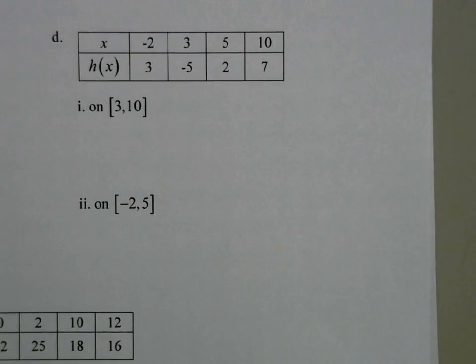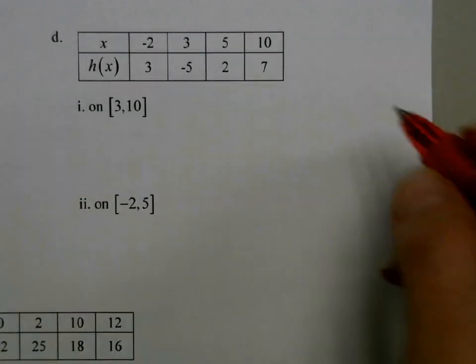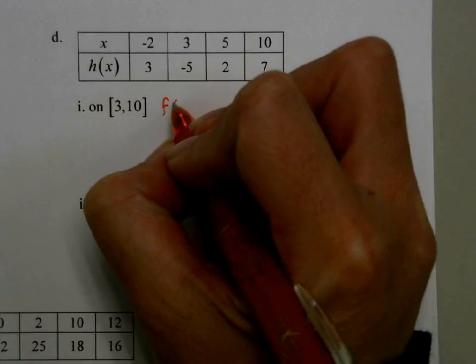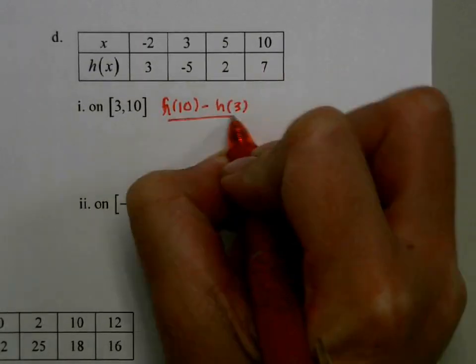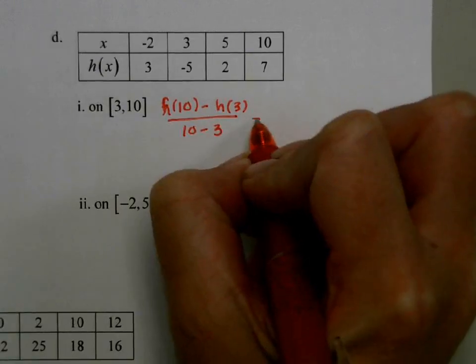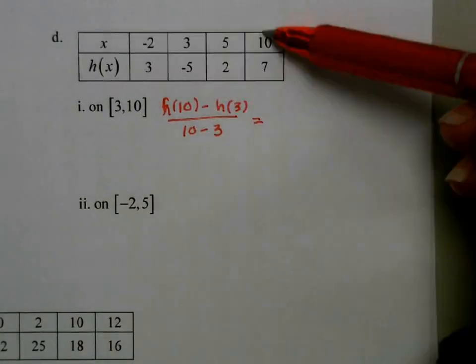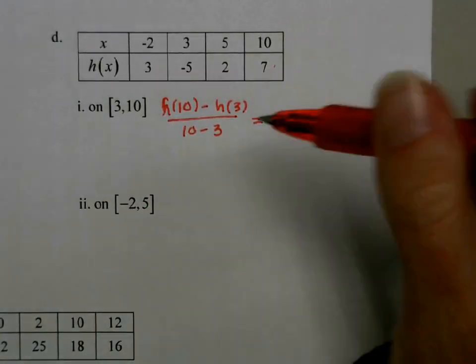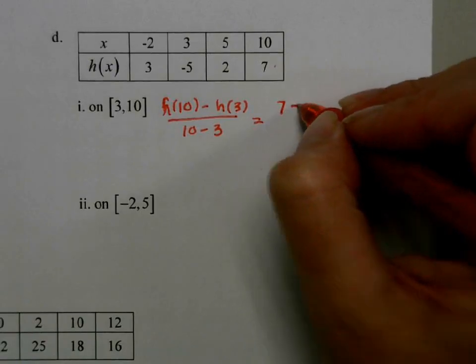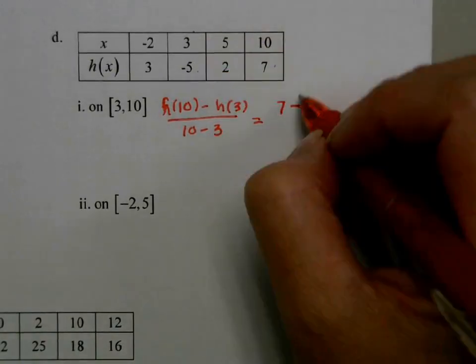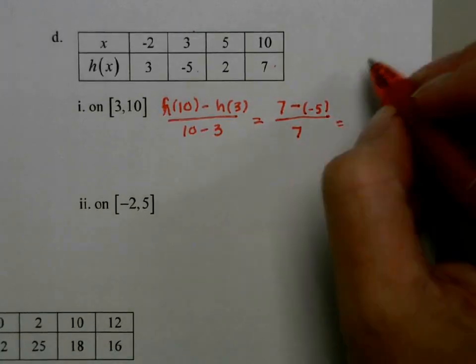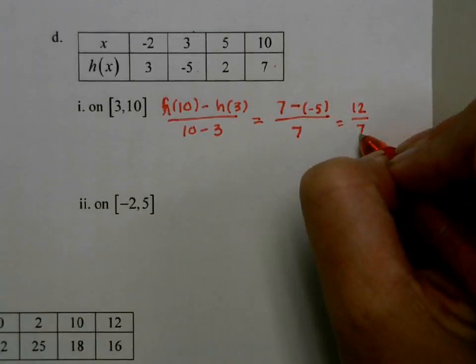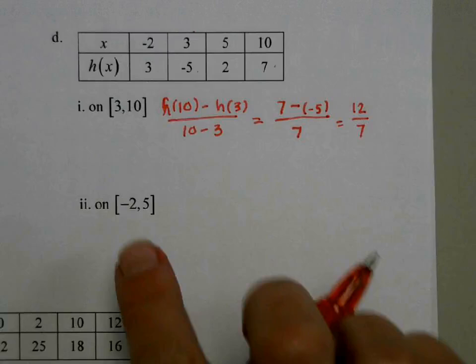Next, we have a table of values. We're on the interval 3 to 10. So again, I'm going to do my template, h of 10 minus h of 3 over 10 minus 3. And we simply get these values from the table. So you go to 10, h of 10 is 7. h of 3 is negative 5. We get 12 over 7.